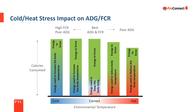This graph shows the way cold and heat stress impact average daily gain and feed conversion. The height of the bars represents the total calories consumed. With cold stress, the pig uses a higher percentage of the energy consumed to maintain body temperature, leaving less energy for growth, which results in higher or worse feed conversion and lower average daily gain. With heat stress, the pig uses more energy to regulate body temperature and, because of the heat, it eats less, which results in less energy being available for growth, resulting in poor average daily gain.